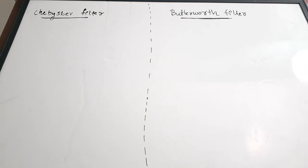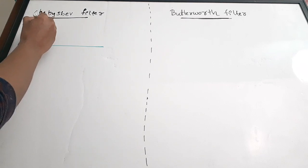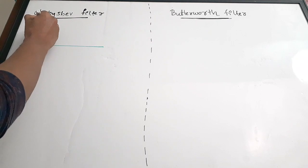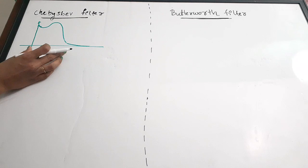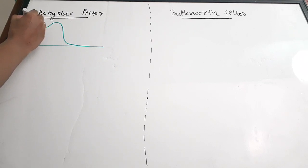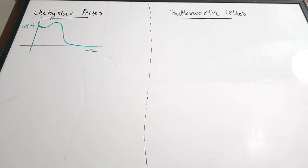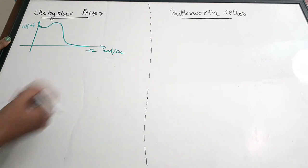What are the similarities and differences between these two filters? The main difference is in the magnitude response. I am going to draw the magnitude response for a Chebyshev filter — we have already discussed the Butterworth one but I will draw it as well. For a low-pass Chebyshev filter, it will pass lower frequencies and cut off higher frequencies. The horizontal axis is H(jΩ) and the vertical axis is Ω — angular frequency in radians per second.